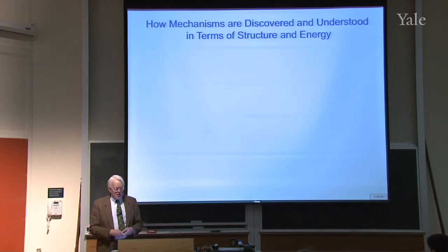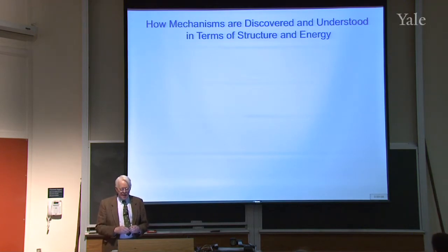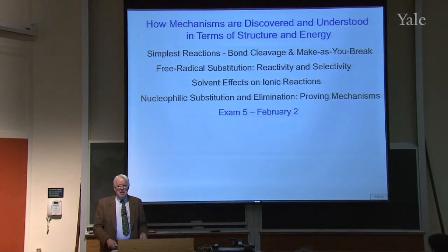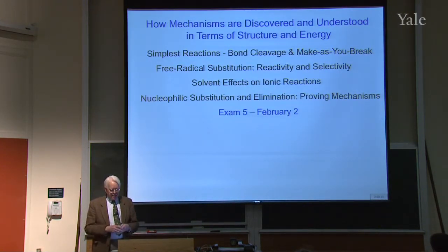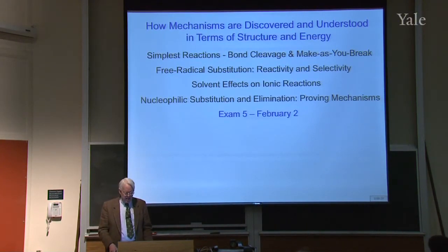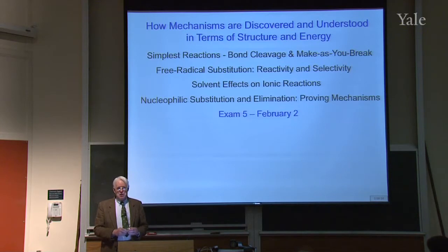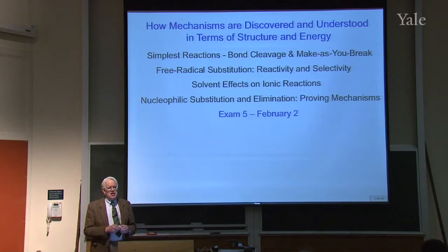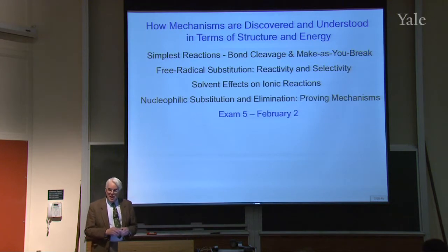The first two quarters of the semester are going to be on how mechanisms are discovered and understood in terms of structure and energy, what we talked about last time. First we'll look at the simplest reactions. There can't be anything much simpler than just cleaving a bond. But remember, there's also the possibility of making a bond at the same time you break a bond. So we're going to start with free radical substitution, one of the earlier reactions to be studied, in the 1830s in France. We'll use it to talk about the concepts of reactivity and selectivity — when you can get different products, how do you control or predict which ones you'll get?